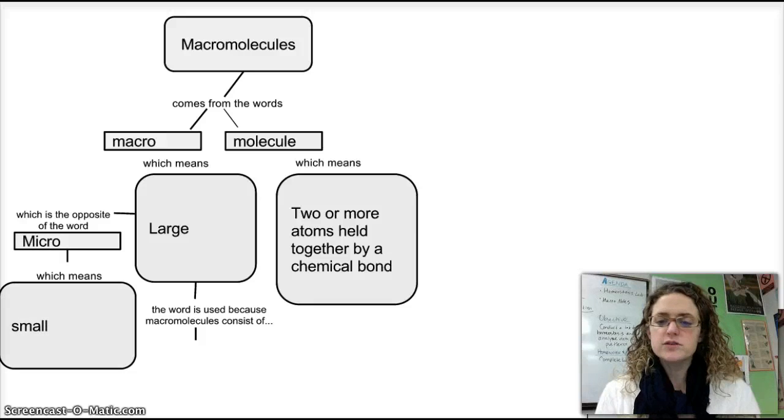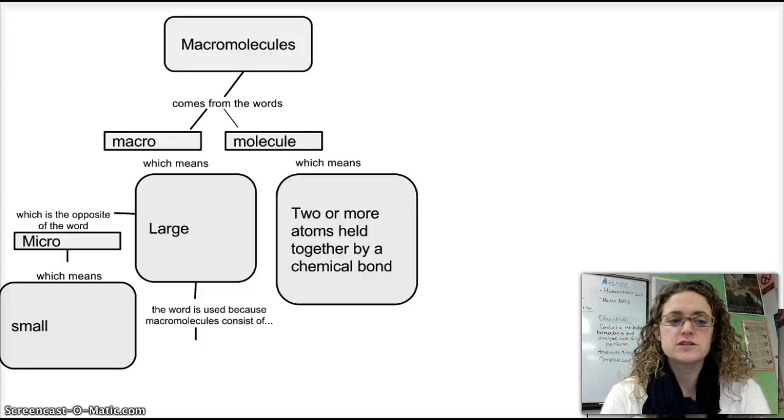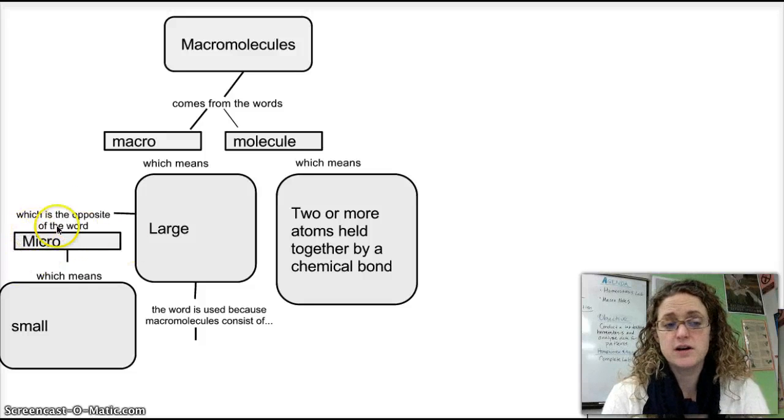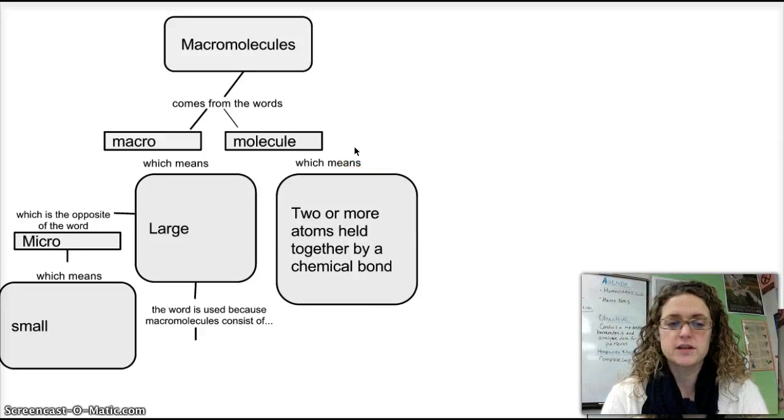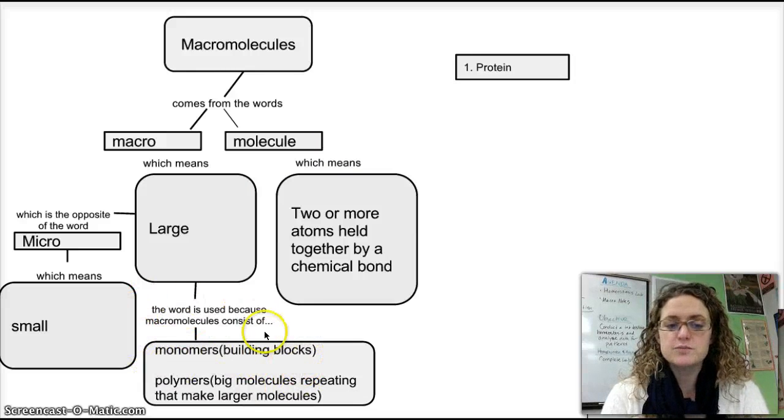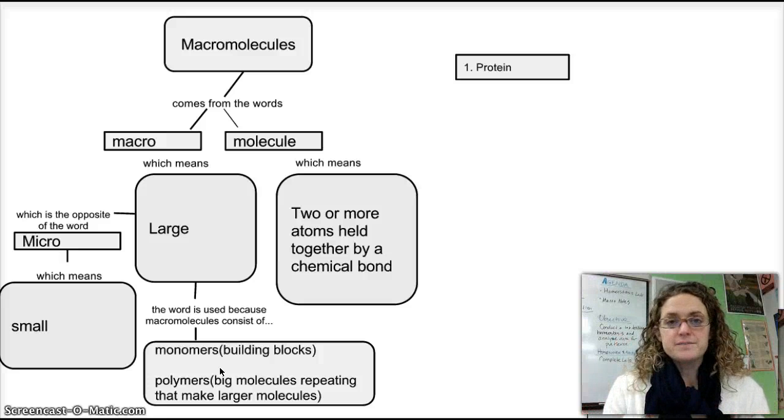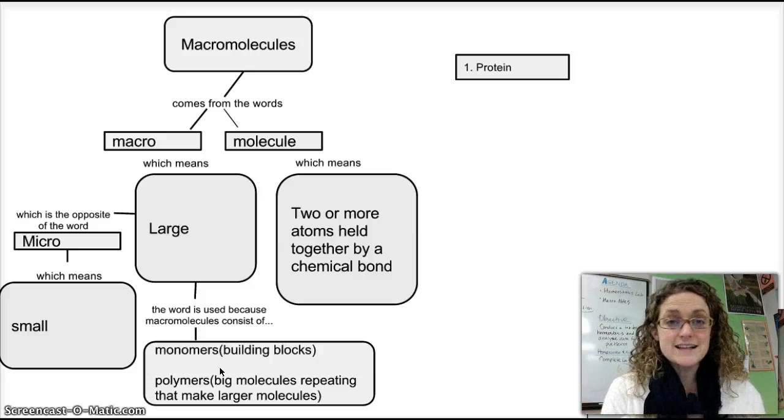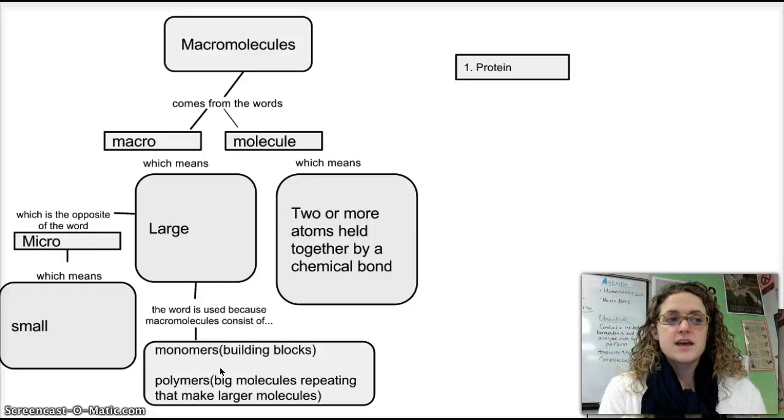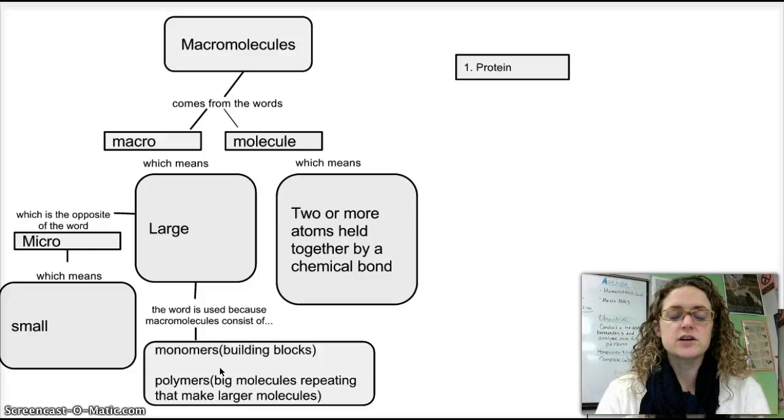These macromolecules are different from small or single atoms or small particles in the body that also have a function. So we're looking at not small items today, but we're looking at these large molecules. And we use the word macromolecule because macromolecules are built of monomers. And these are building blocks. They're repeating building blocks that add up together to create a large molecule. What's nice about macromolecules that are built of monomers is once you figure out the little Lego piece, the building block, then everything after that is just a bunch of those building blocks glued together.